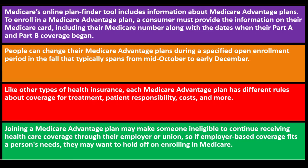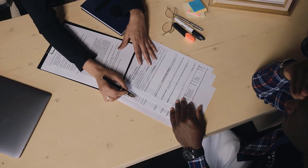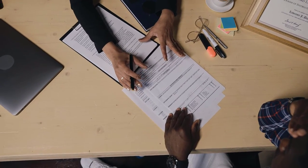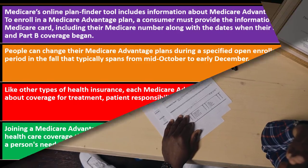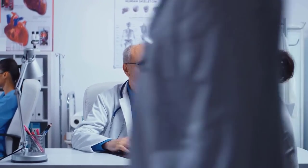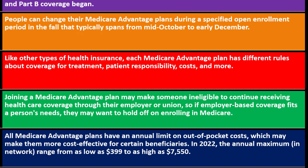If employer-based coverage fits a person's needs, they may want to hold off on enrolling in Medicare. This transitional period can be complicated — if you're still working, you have employer-provided health care and benefits to consider as well. People are living much longer now, so many may still be working at age 65. All Medicare Advantage plans have an annual limit on out-of-pocket costs, which may make them more cost-effective for certain beneficiaries. In 2022, the annual maximum in-network range from as low as $399 to as high as $7,550.